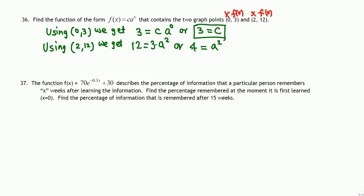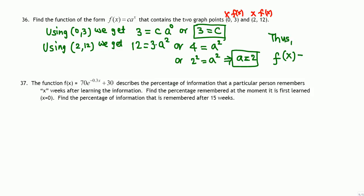Dividing both sides by 3 gives a² = 4. Since 4 is 2 squared, and the exponents are the same, the bases must be equal, so a equals 2. Now we have both c and a, so we can write the function.